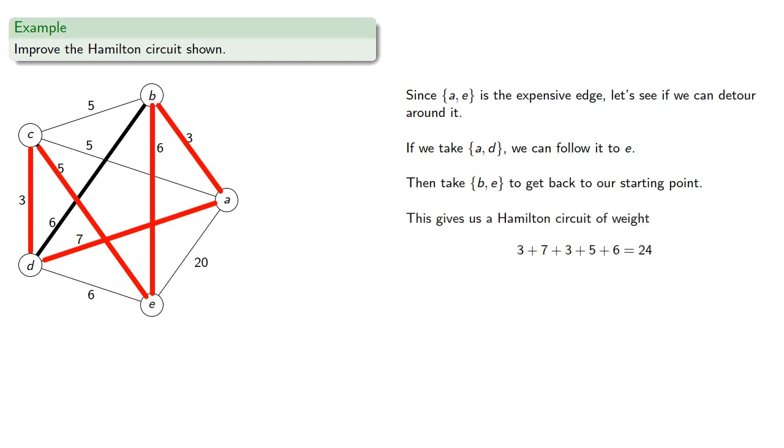This gives us a Hamilton circuit of weight 24. And since the least possible weight of 5 edges is 21, this particular Hamilton circuit may be minimal.